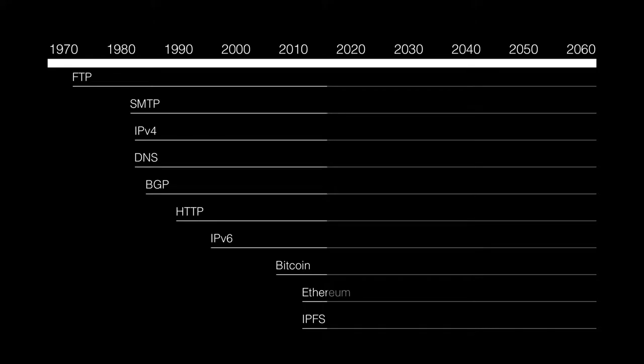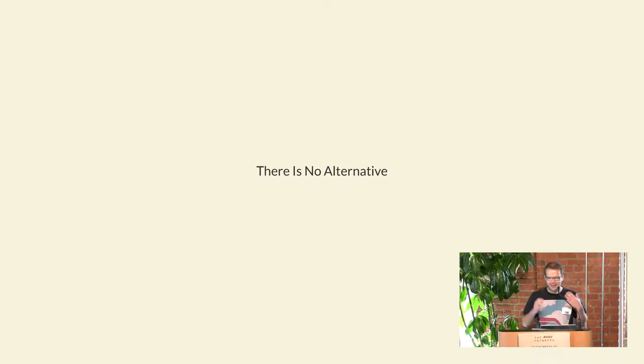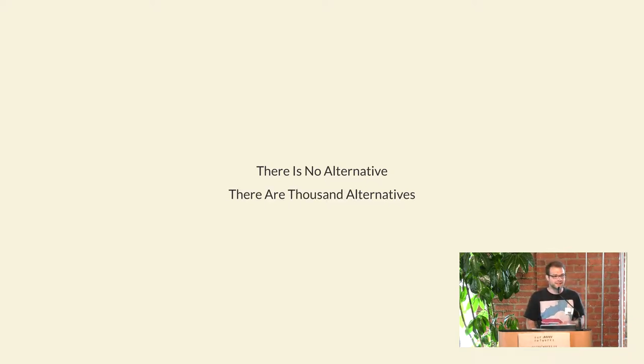Here's a little timeline of protocols. I was born in '89, so FTP, SMTP, IP, DNS, BGP — they all are older than I am. Basically grew up knowing nothing else. And so it might seem like there is no alternative, similar to other structures in our lives, but actually there are a thousand alternatives and more.